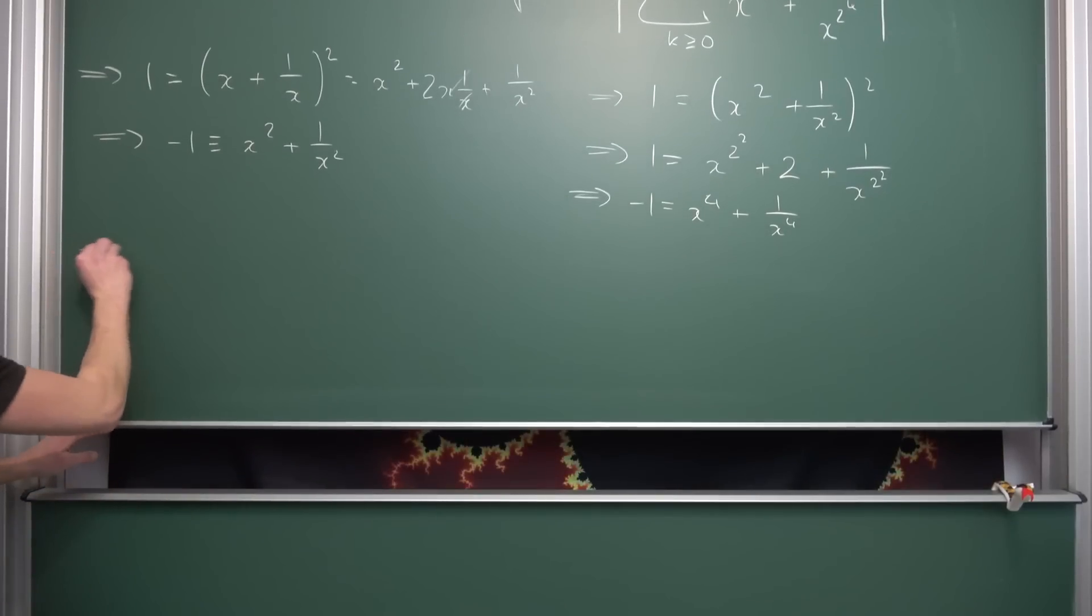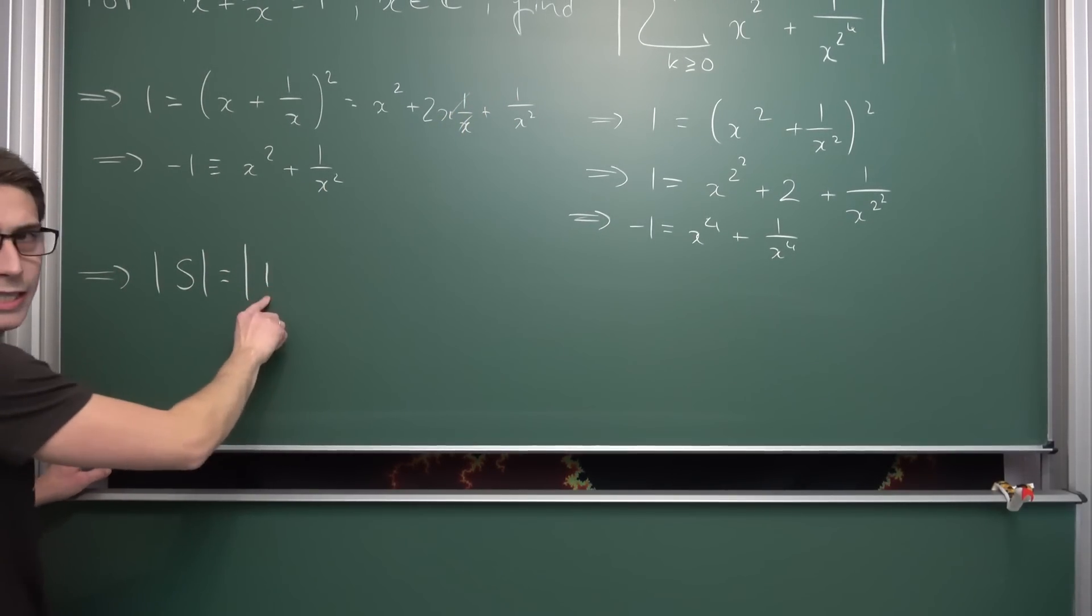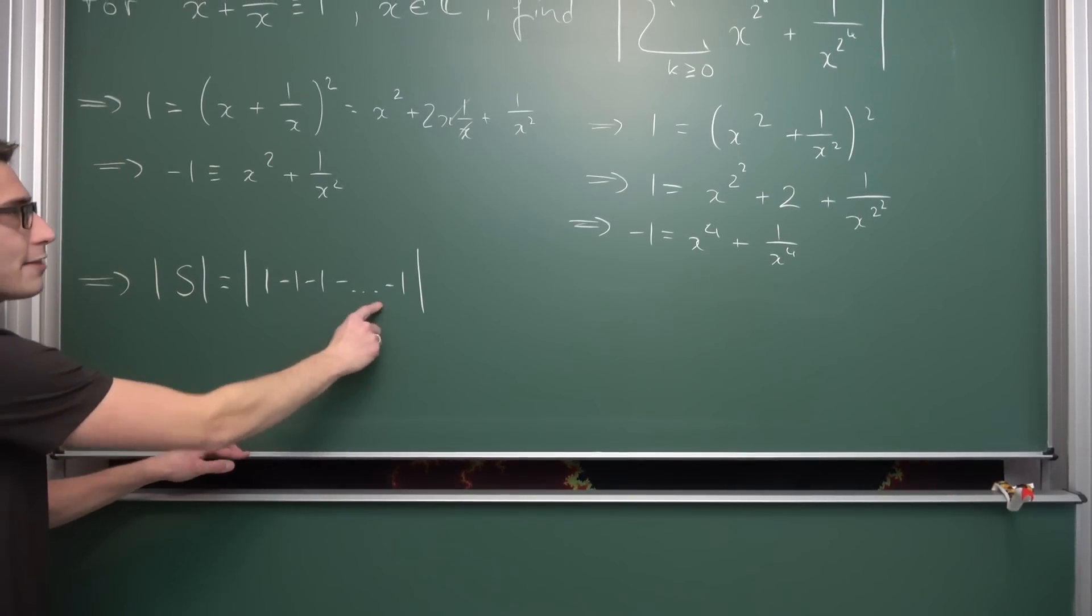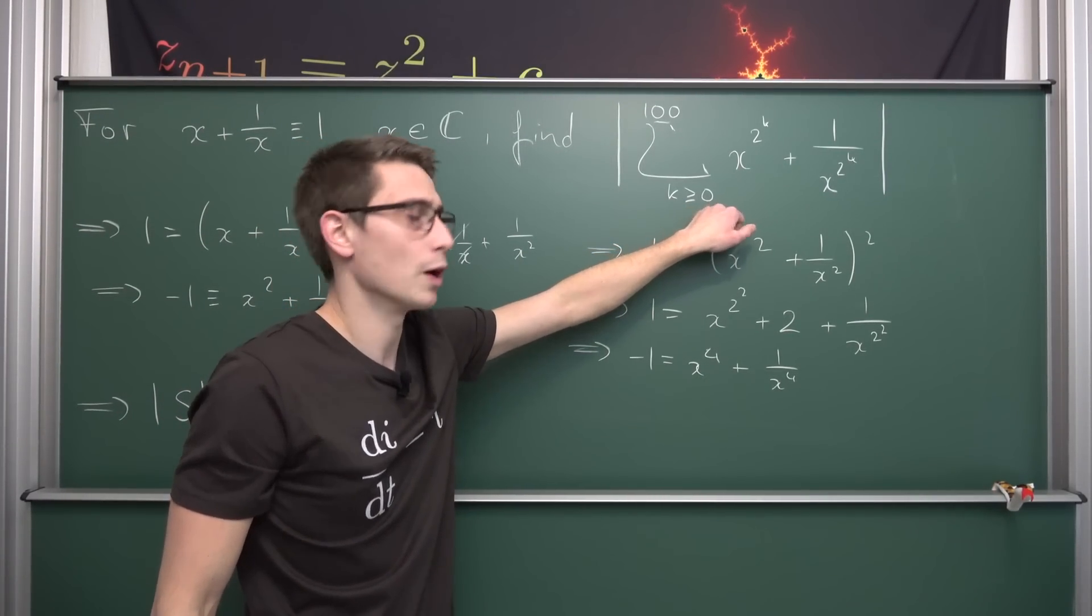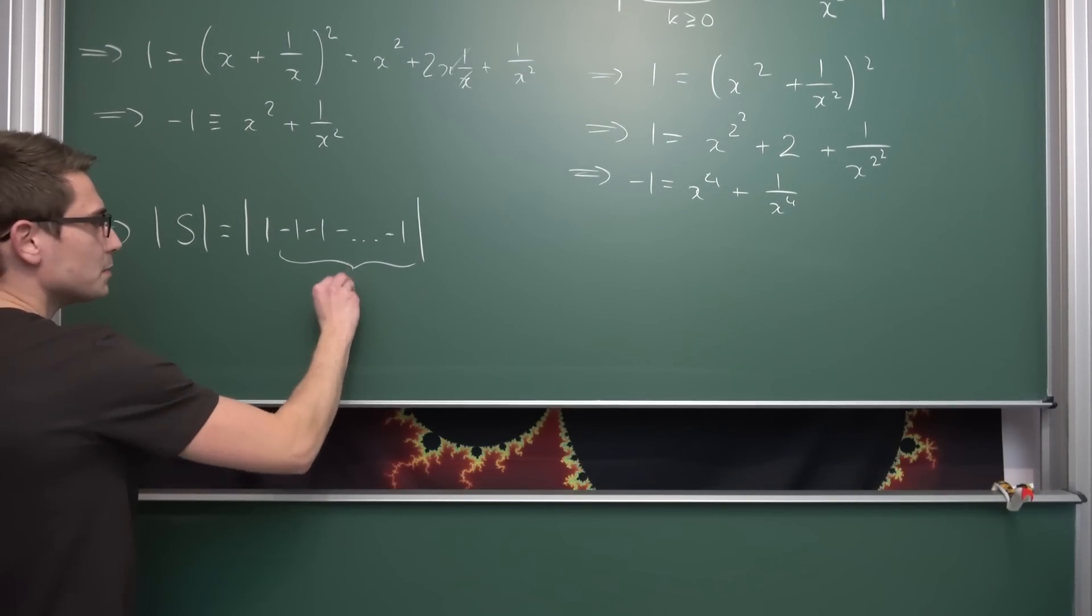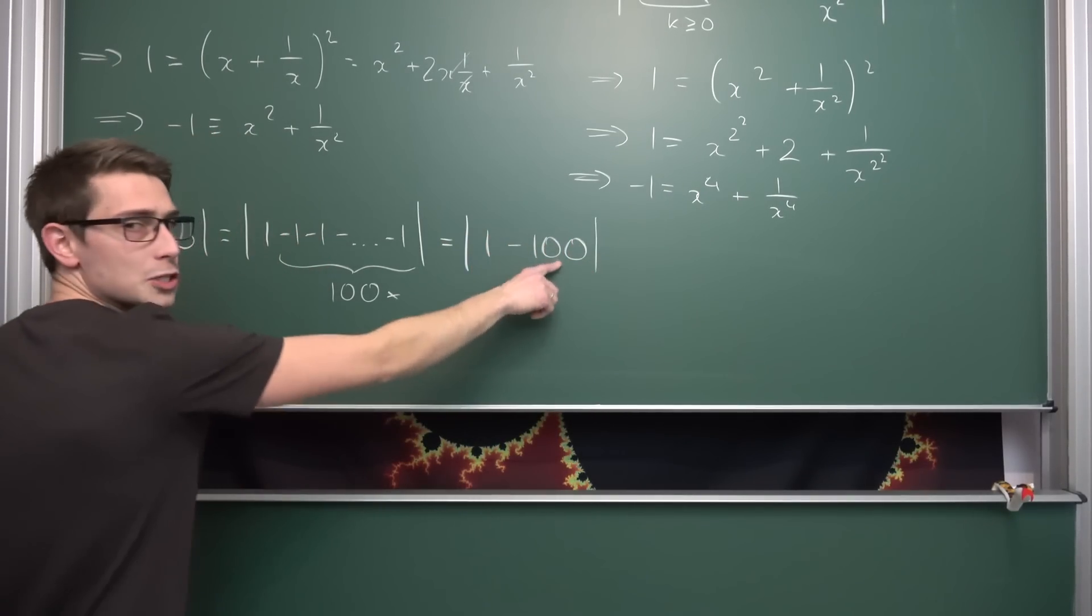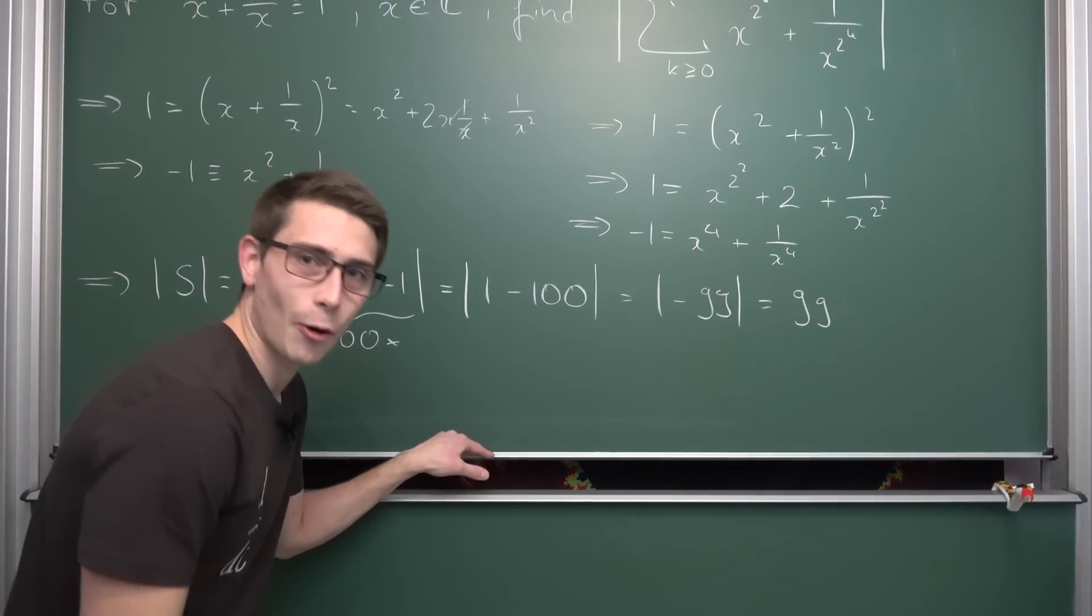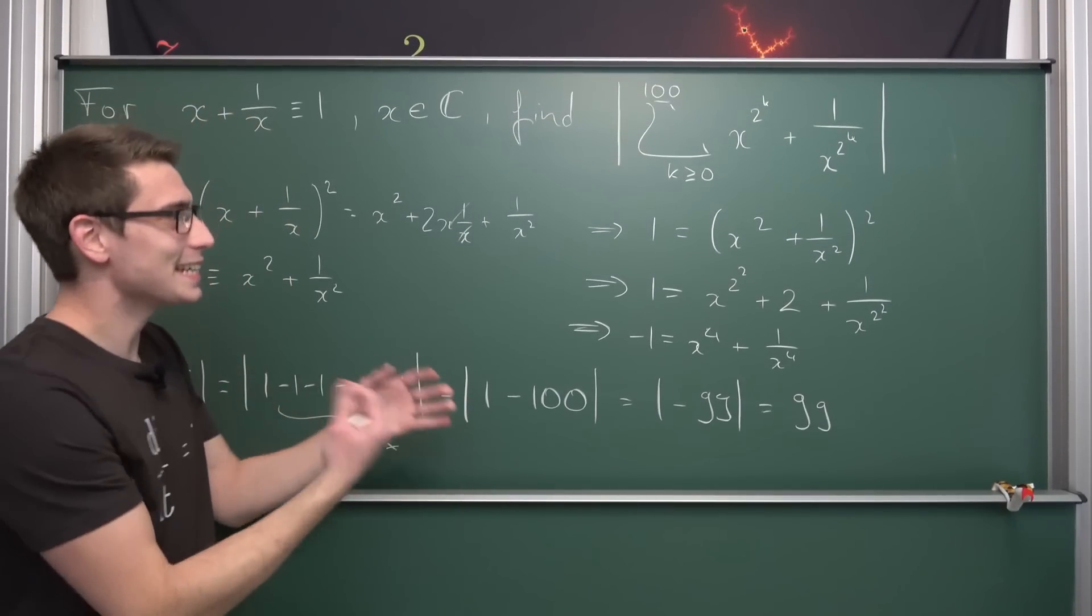Overall what we get is that the absolute value of our summation results in the absolute value of 1 minus 1 minus 1 minus dot dot dot up until negative 1. So how often do we have negative 1s here? We start at 0 and the first negative 1 happens at the first iteration. So counting from 1 to 100 gives us 100 times negative 1. This results in the absolute value of 1 minus 100. 1 minus 100 gives us negative 99, but by definition of the absolute value this spits out 99, which concludes the problem. It's easy but really nice, beginner friendly calculus exercise.